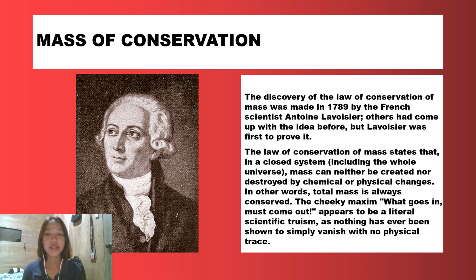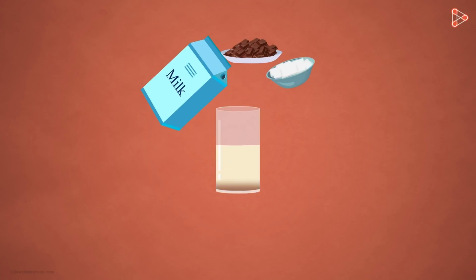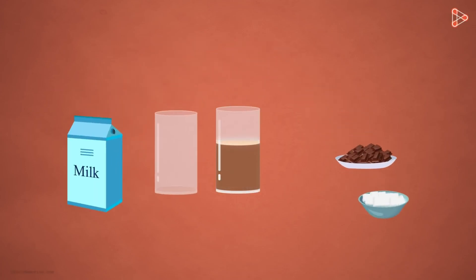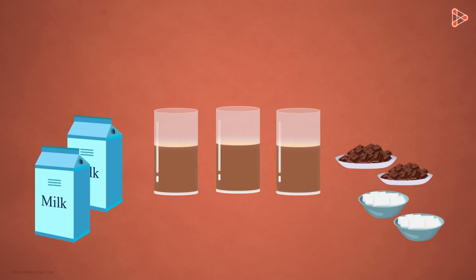Here is an example of mass conservation and a further explanation. If we plan to make chocolate milk for our family, then we will add ingredients like milk, sugar and chocolate in a proportionate amount. Now what if we have guests at home? We will simply have to double or triple the amount of individual ingredients.